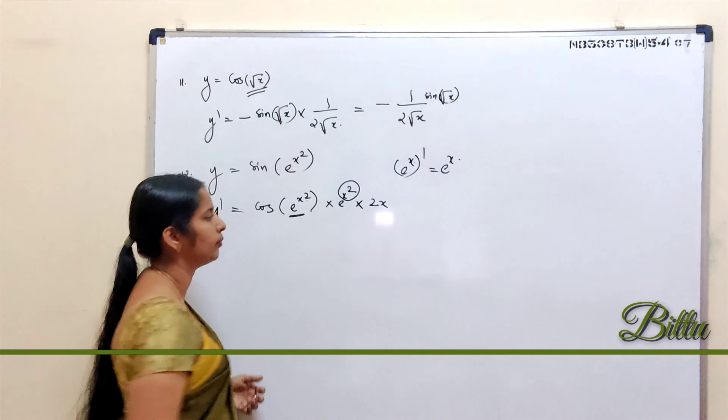Next, consider y = e^(sin x). Applying the result that the derivative of e^x is e^x itself — here in place of x it is sin x — so the derivative is e^(sin x), and we multiply by the derivative of sin x, which is cos x. Therefore y' = cos x · e^(sin x).